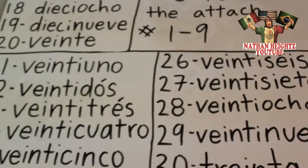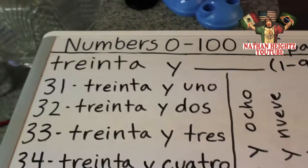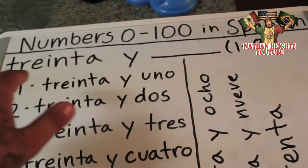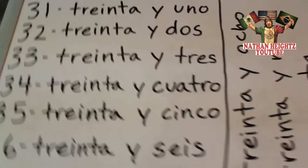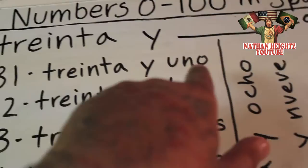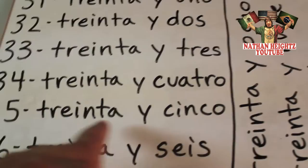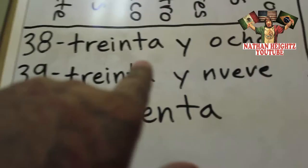Once we hit 30, the formula becomes 30 + y (y means 'and' in Spanish) + a number 1 through 9. So 31 through 39: 31, 32, 33, 34, 35, 36, 37, 38, 39, and 40.